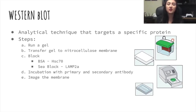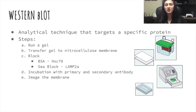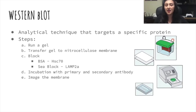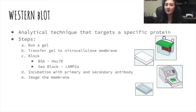For western blotting, we run a gel, then we transfer that gel onto a nitrocellulose membrane, which looks kind of like paper but is not paper. Then we block it using a primary and a secondary antibody. In the case of HSC70, we use BSA with nonfat milk, and then C-block for LAMP2A. Once we incubate it, we image the membrane and then it's ready to analyze.